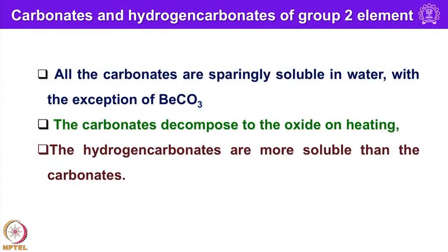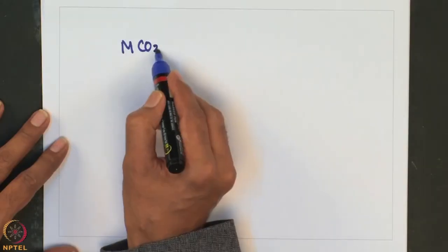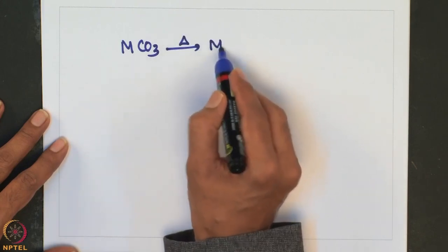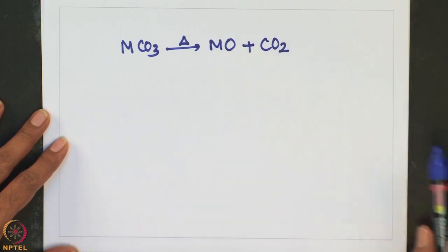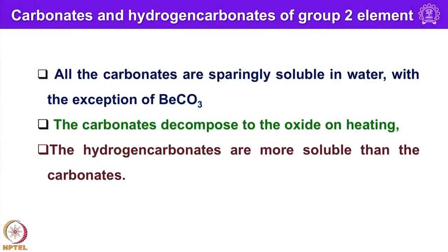Let us look into the carbonates and hydrogen carbonates of group 2 elements. All carbonates of group 2 elements are sparingly soluble in water, with the exception of beryllium carbonate. The carbonates decompose to the oxide on heating — for example, MCO3 gives MO plus CO2. The hydrogen carbonates are more soluble than the carbonates, and the thermostability trends can be explained in terms of trends in lattice enthalpies.